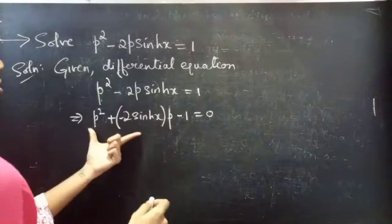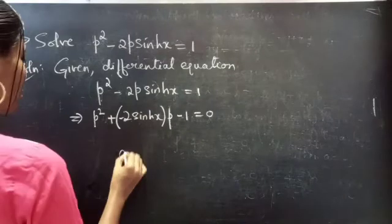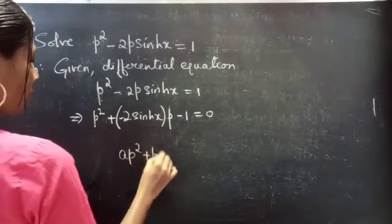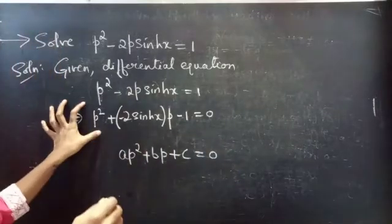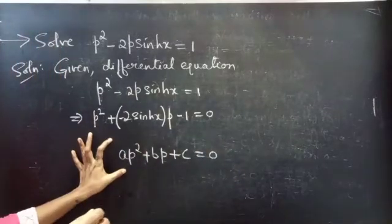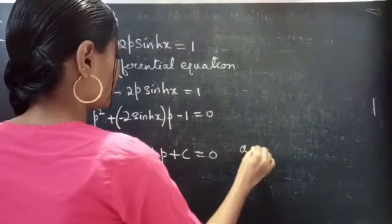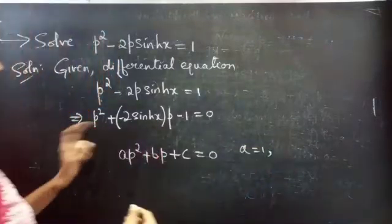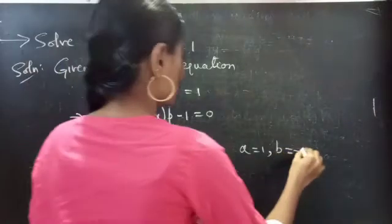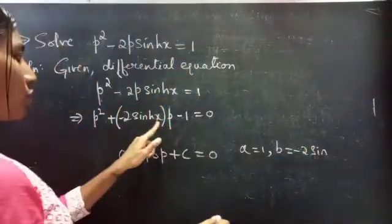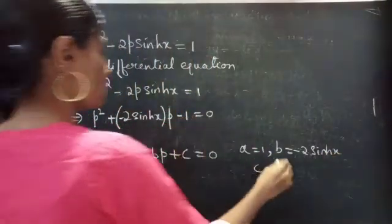So this is a quadratic form — a quadratic equation in P. We are going to compare this with the standard quadratic equation in P. Then we will get: a, the coefficient of P², equals 1; b, the coefficient of P, equals minus 2·sinh(x); and c equals minus 1.